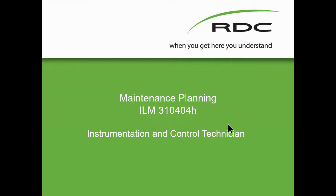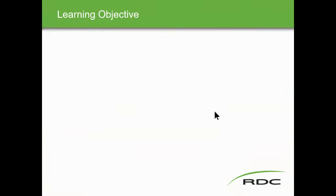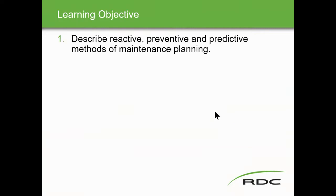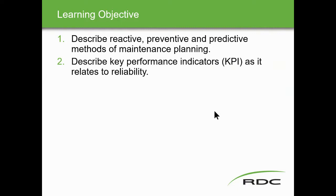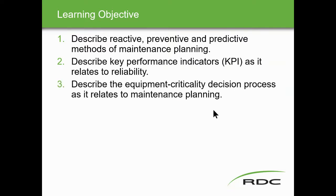Maintenance planning — learning objectives. We're going to describe the reactive, preventive, and predictive methods of maintenance planning. Describe the key performance indicators — we call those KPIs — as it relates to reliability. Describe the equipment criticality, so we're going to put equipment in order of its criticality, which one's more important than the other, and a hierarchy and criticality decisions process as it relates to maintenance planning.